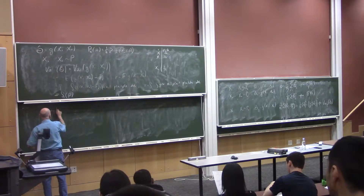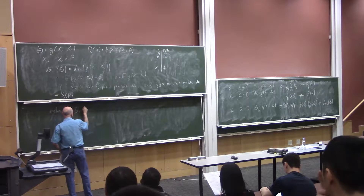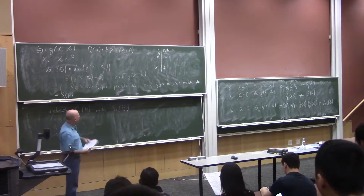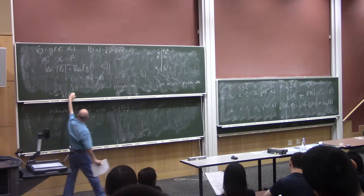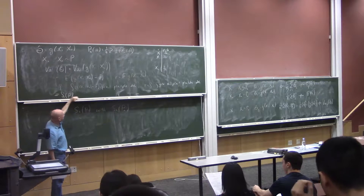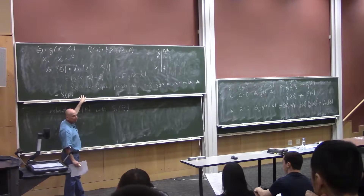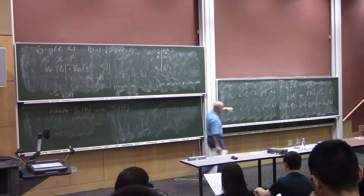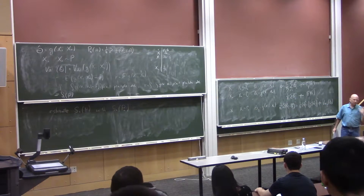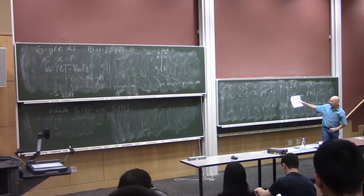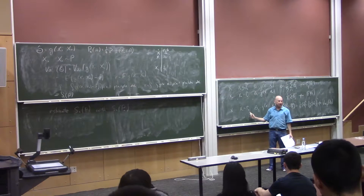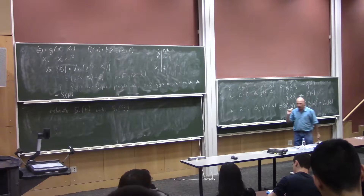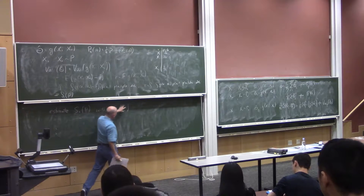The bootstrap is really about the conceptual step: estimating this variance — which is a functional of p — by inserting the empirical distribution as a plug-in estimator. In principle I could compute this n-dimensional integral with p_n in place of p, but it's very complicated. So instead I resort to simulation, just as before, except now I simulate from p_n instead of p.